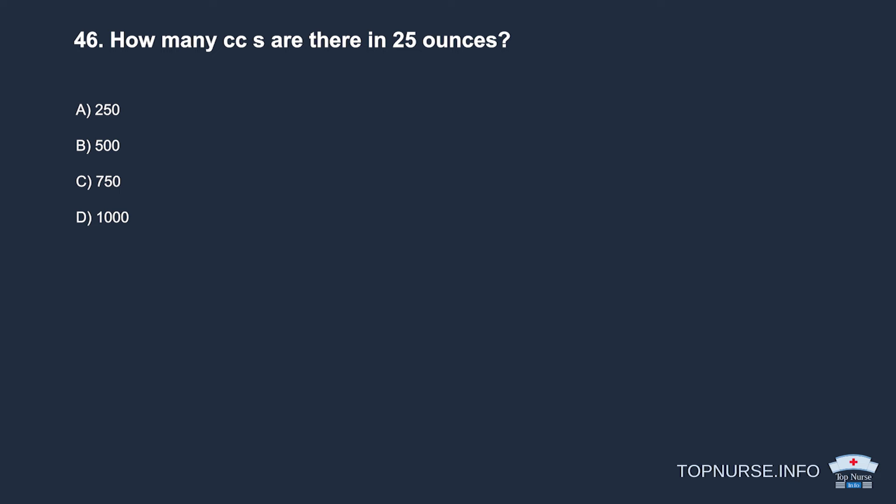Question 46: How many CCs are there in 25 ounces? a. 250. b. 500. c. 750. d. 1000. Correct answer: c. 750. There are 30 cubic centimeters per ounce, so there are 750 cubic centimeters in 25 ounces.